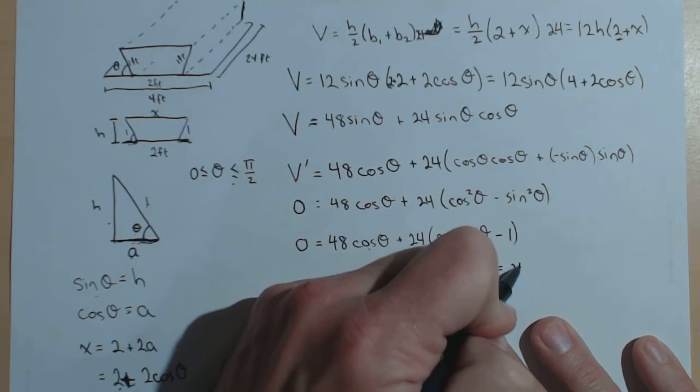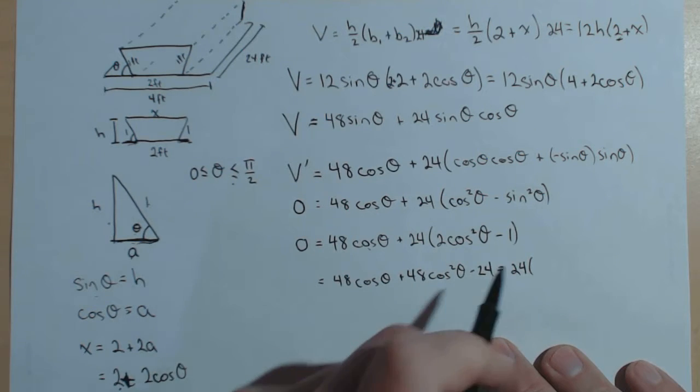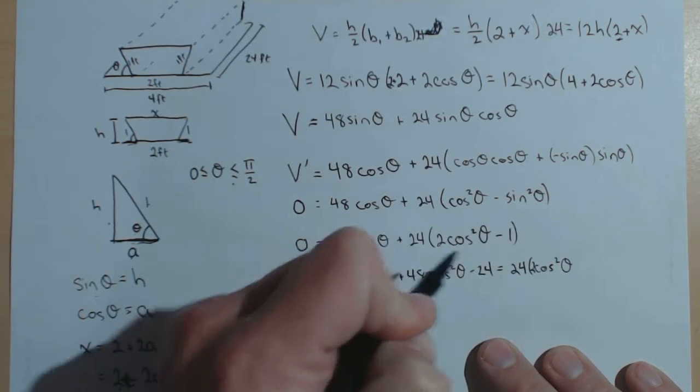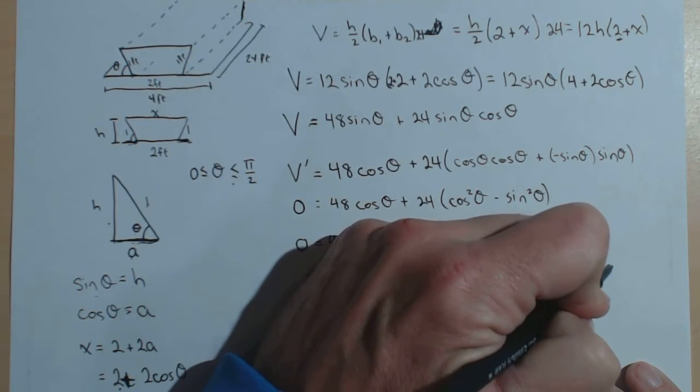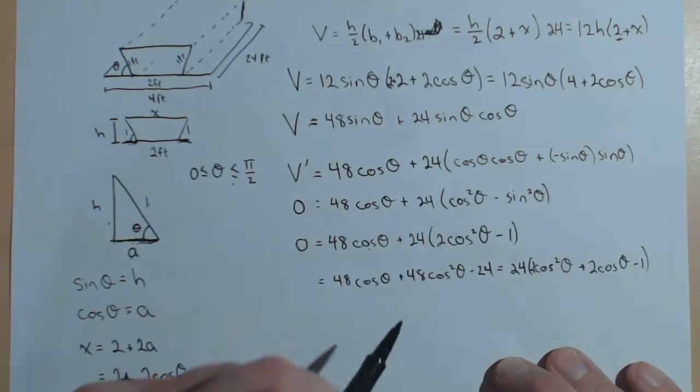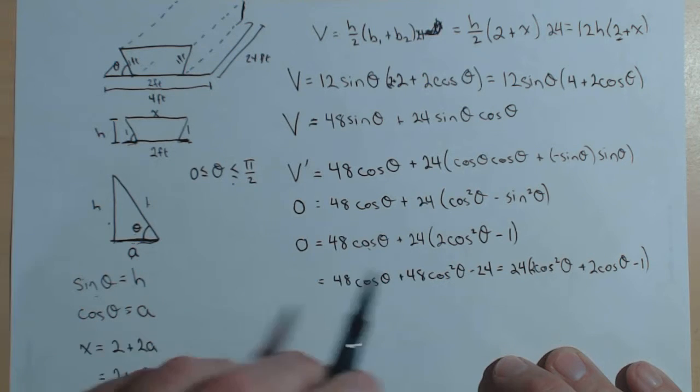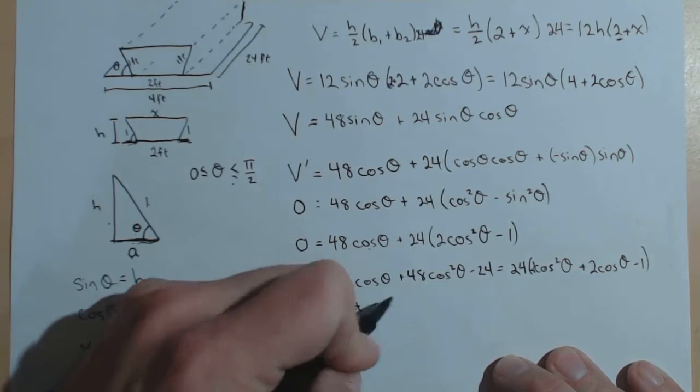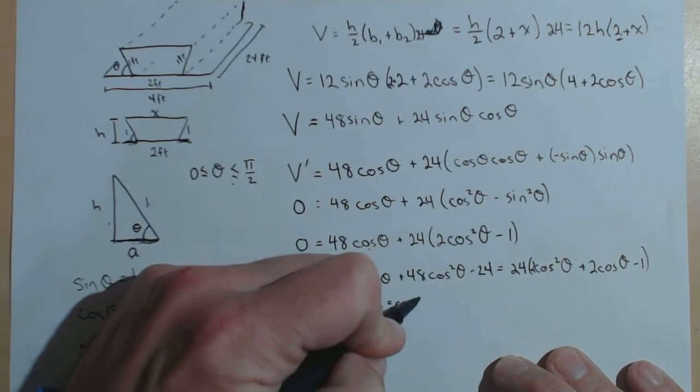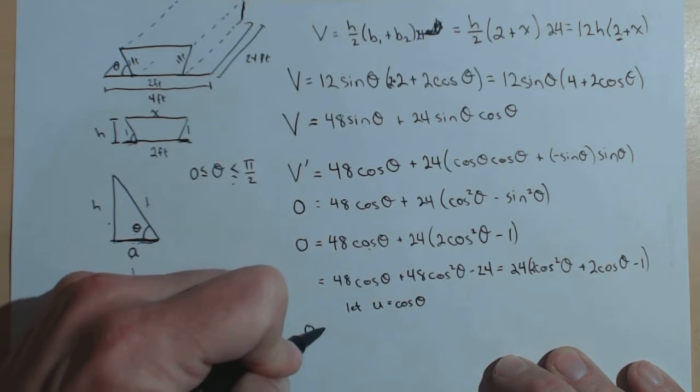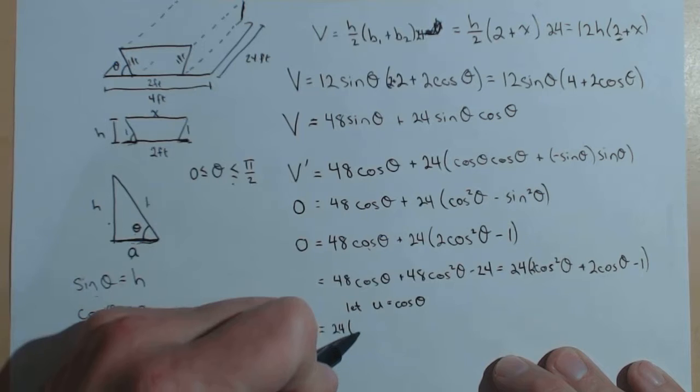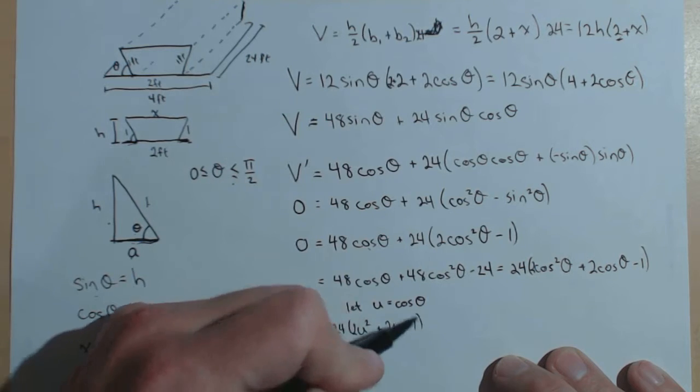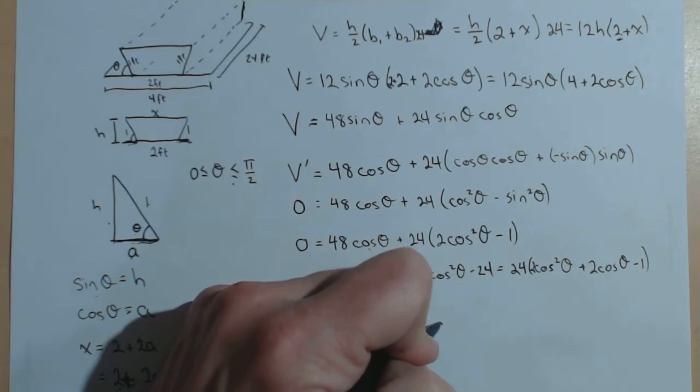And, what I'm going to do is I'm going to factor out the 24 and write it in our quadratic form. 2 cosine squared theta plus 2 cosine of theta minus 1. All right. Now, this may look a little bit messy, but what we're going to do is we're going to treat this. So, if I let u equal cosine theta, then what I have is the quadratic 24 times 2u squared plus 2u minus 1.